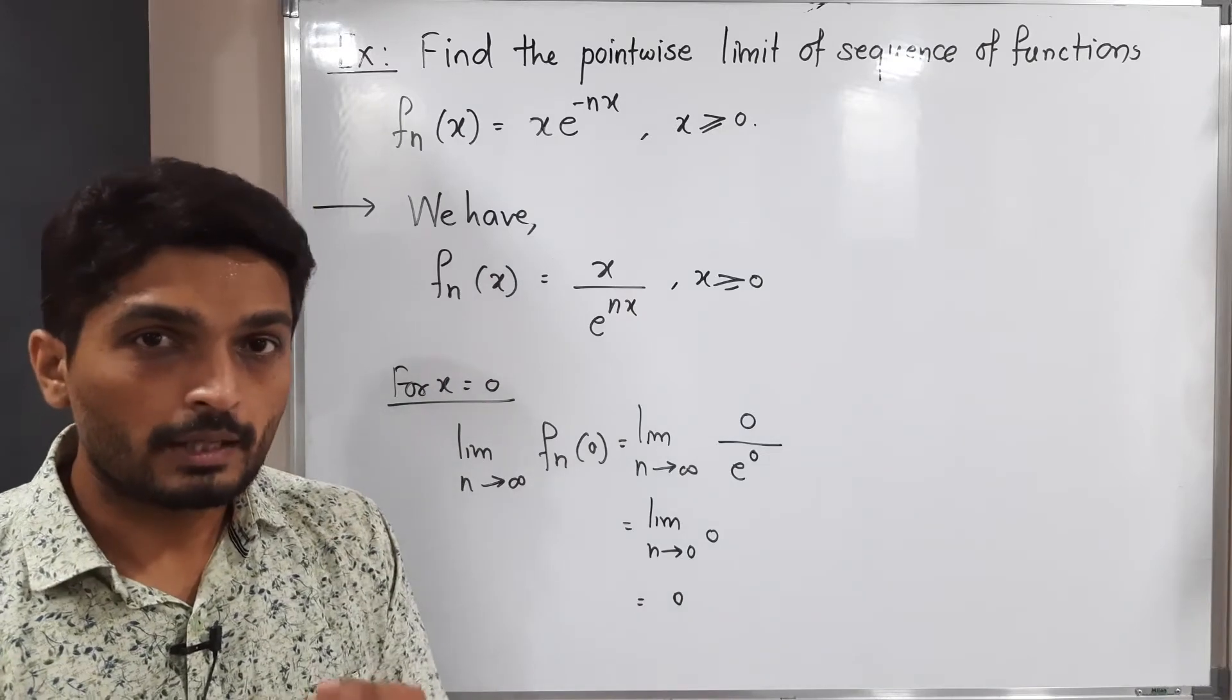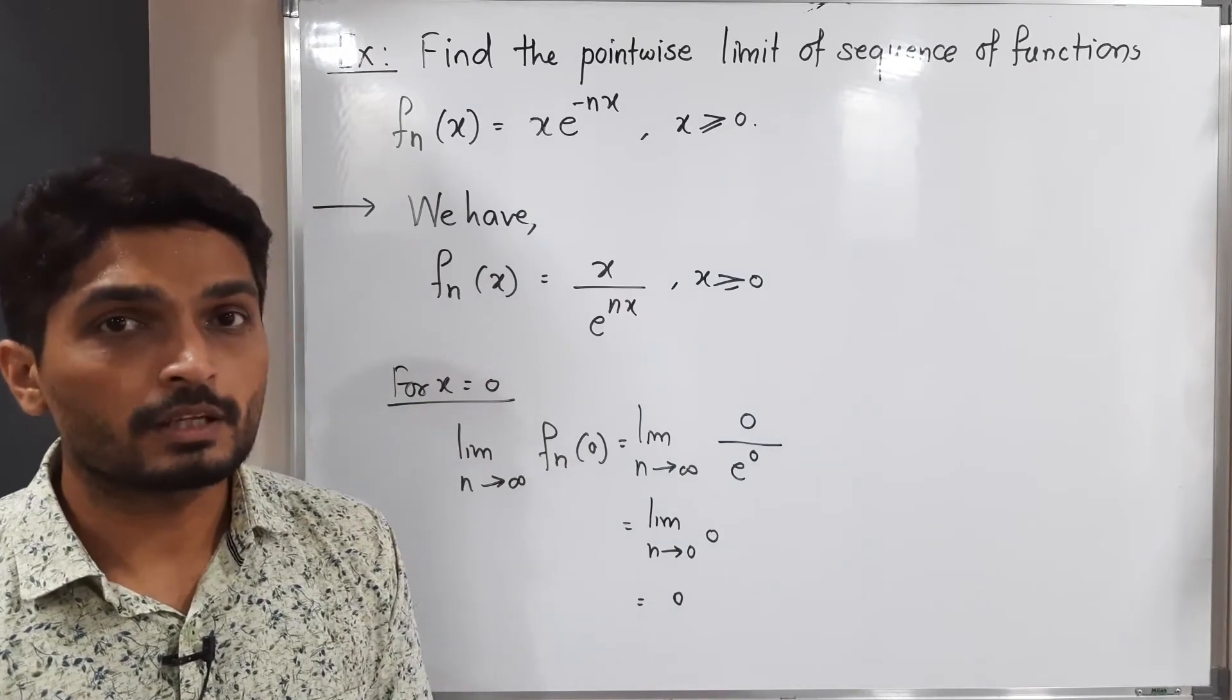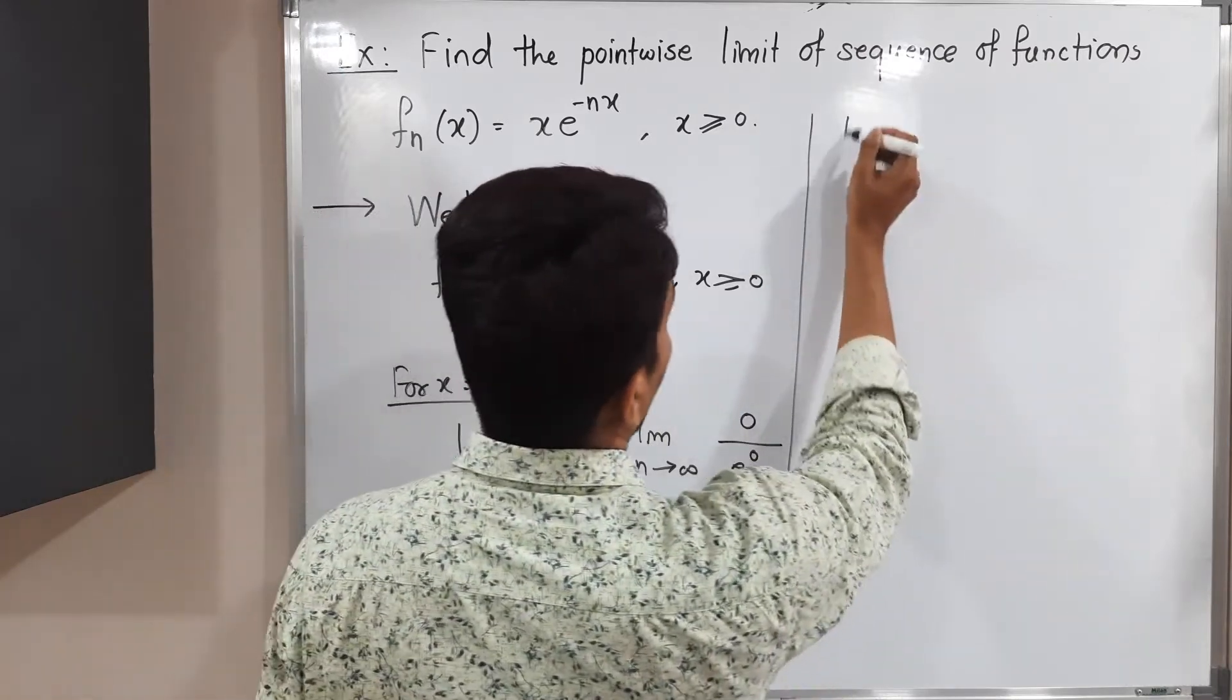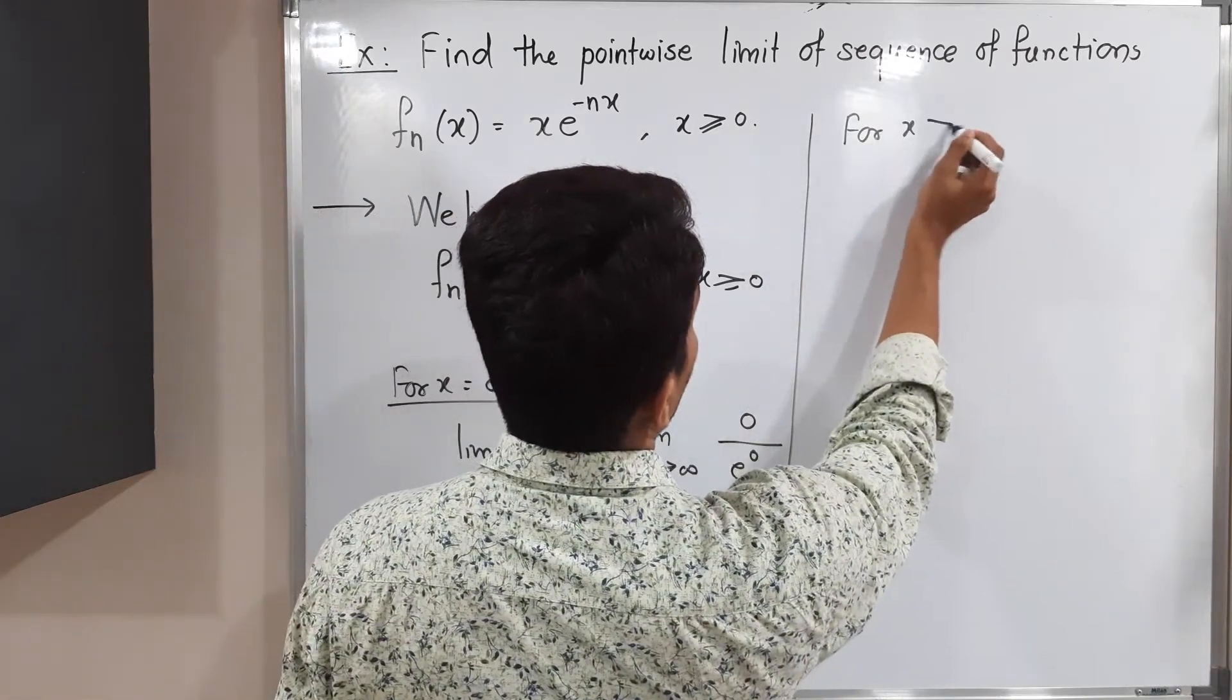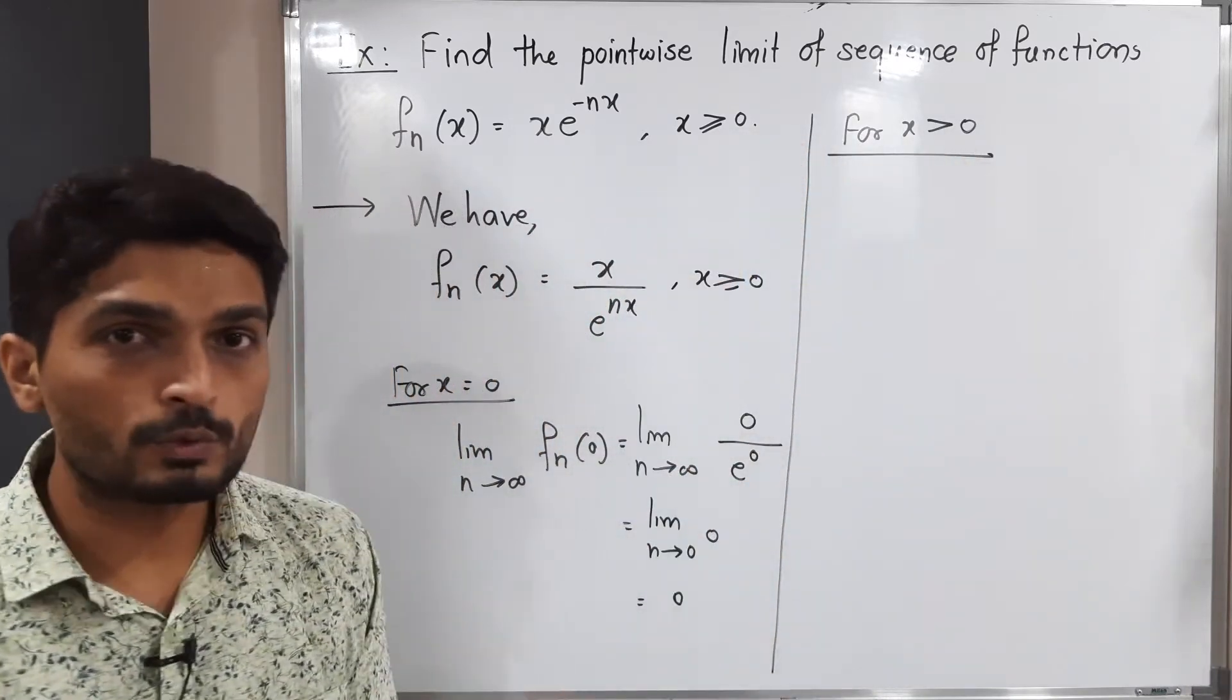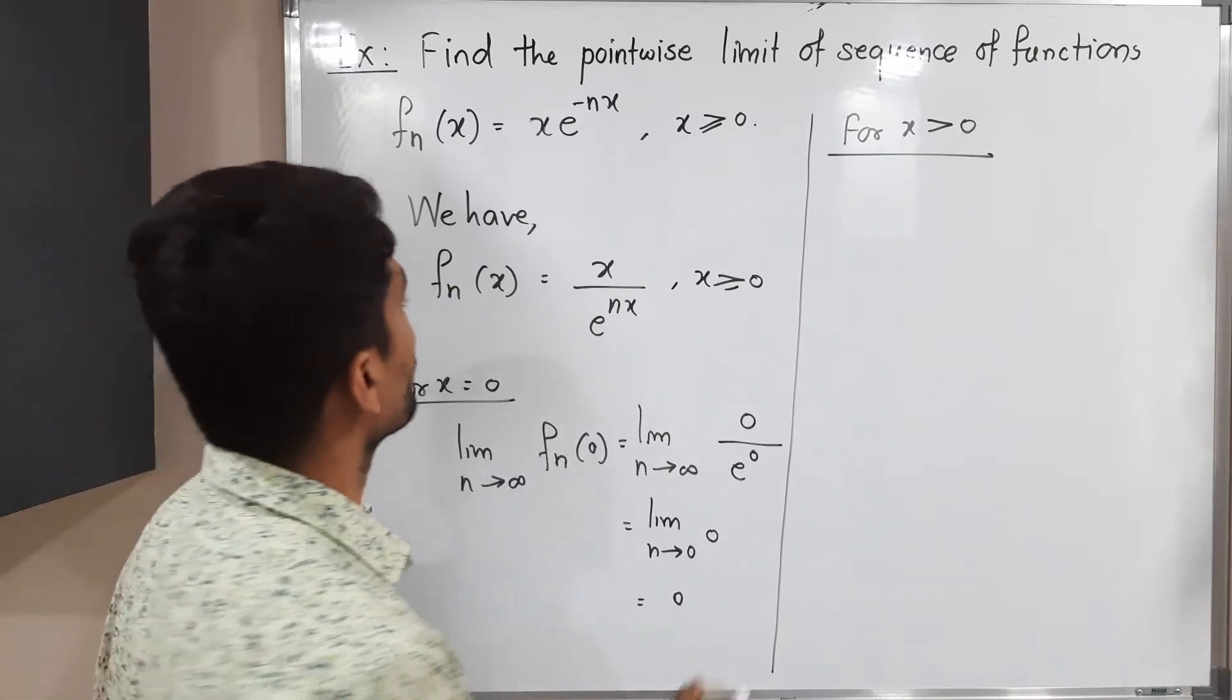Now let us discuss the second case. If x ≠ 0, let us see what will happen. For x strictly greater than 0, since we have either x = 0 or greater than 0, let us consider greater than 0 now.